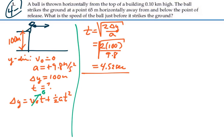Hence, the final velocity in the y direction is going to be the initial velocity in the y direction plus acceleration times time. Our initial velocity in the y direction is zero. And so this is going to be equal to 9.8 times 4.52 seconds, and that's equal to 44.3 meters per second. That's in the y direction.